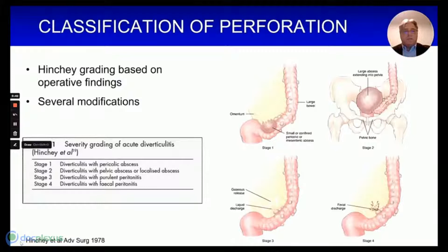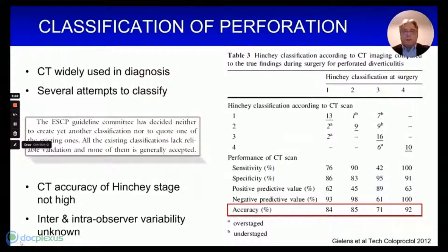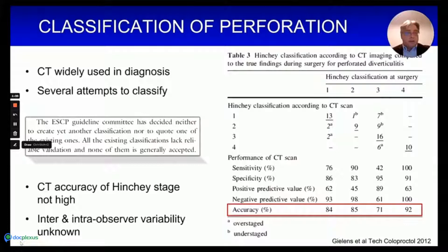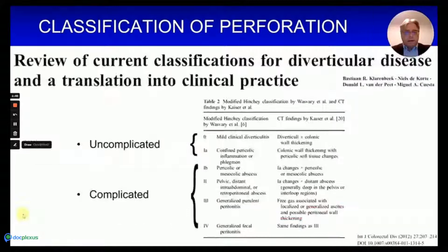Things have moved on a long way since the initial descriptions of diverticular disease and the Hinchey classification described back in the 1970s. We now find ourselves with widespread use of CT scanners to help in diagnosis. Several attempts have been made to classify CT appearances, but none have achieved widespread general acceptance. When intraoperative Hinchey classification is correlated to CT reports, the accuracy is not as good as we would hope — particularly for Hinchey grade 3, where accuracy is only around 70 percent, and inter- and intra-observer variability of CT classifications remain unknown.